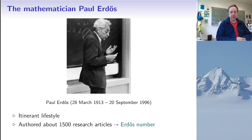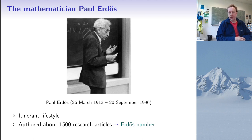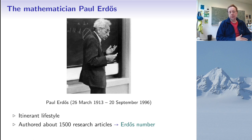For that reason, we mathematicians have a little game called computing our Erdős number. Your Erdős number is one if you have co-written an article with Paul Erdős. If you haven't, but you have co-written an article with someone whose Erdős number is one, then your Erdős number is two, and so on. There are databases about mathematical articles that allow you to compute this number. For instance, my Erdős number is apparently four, which is an average number for most mathematicians.